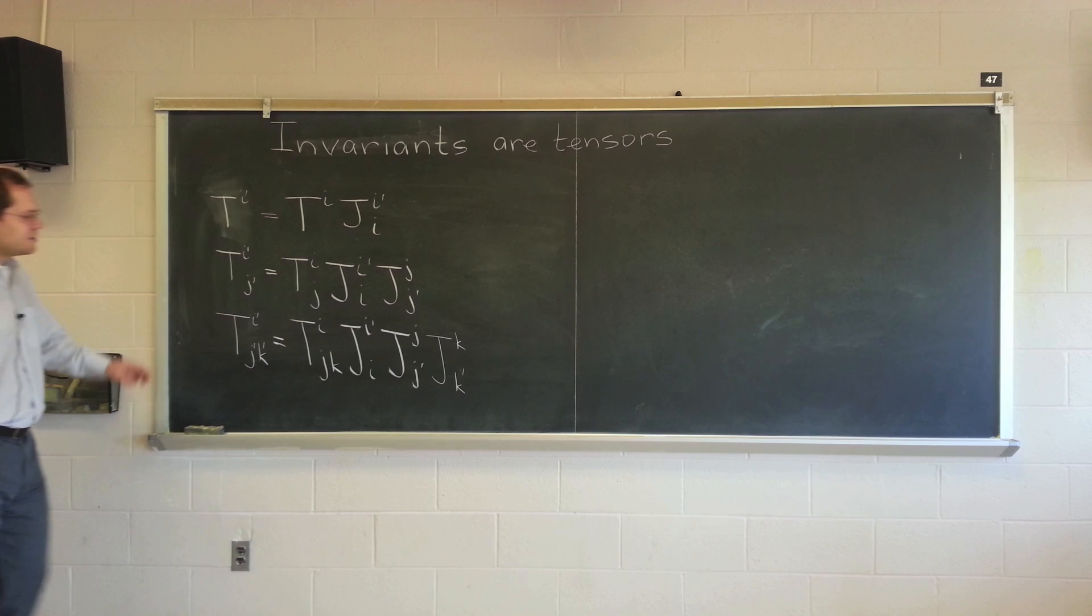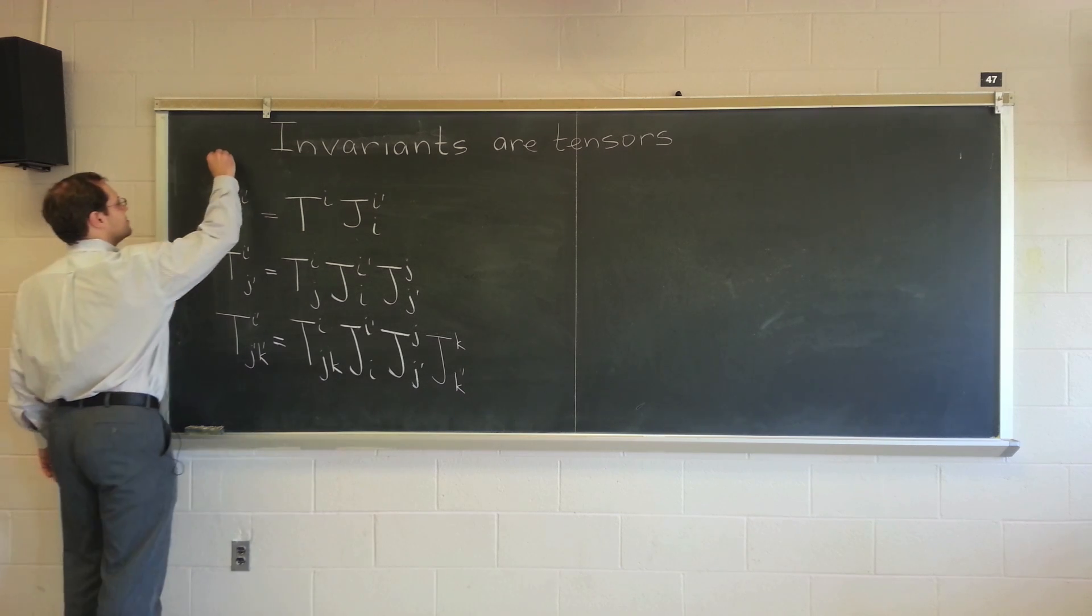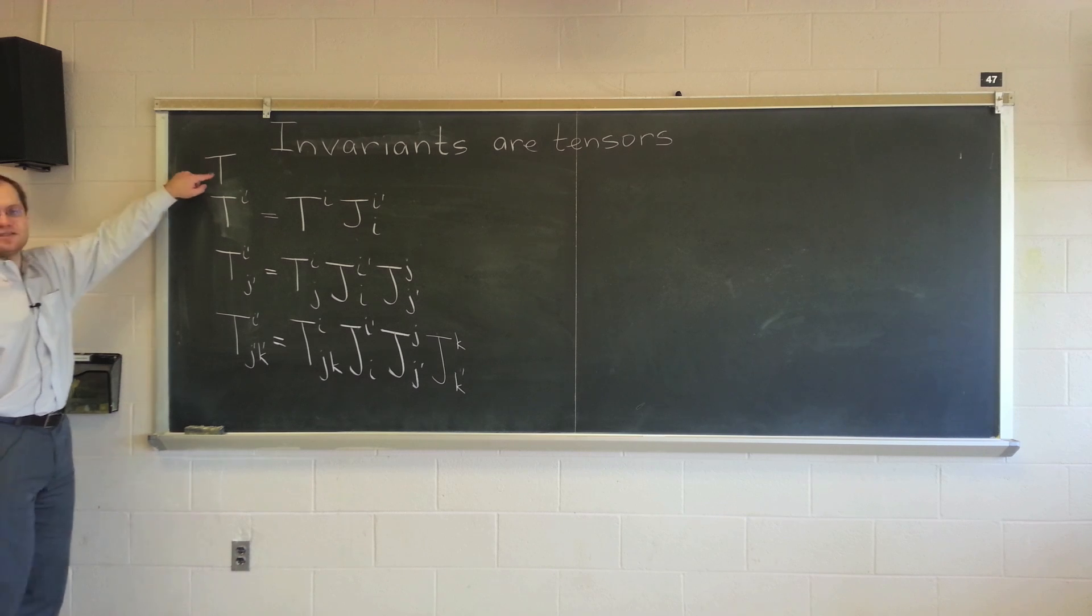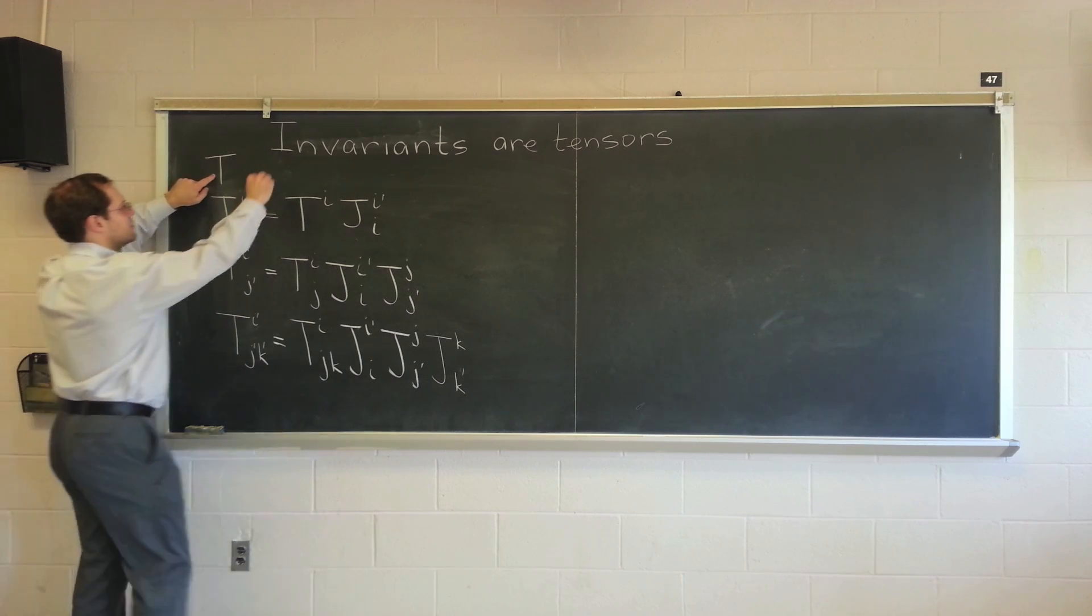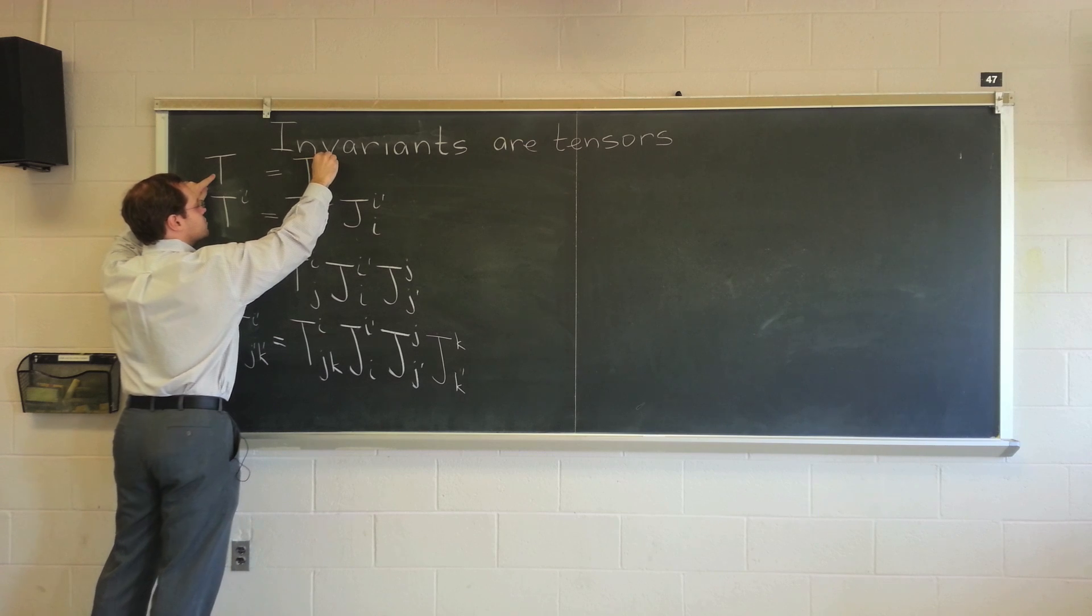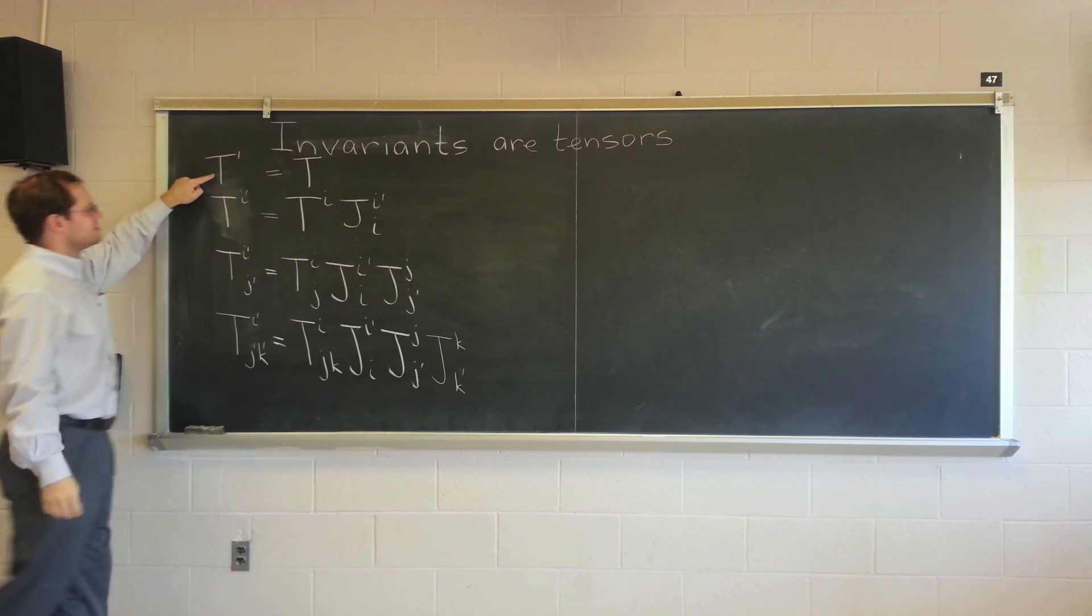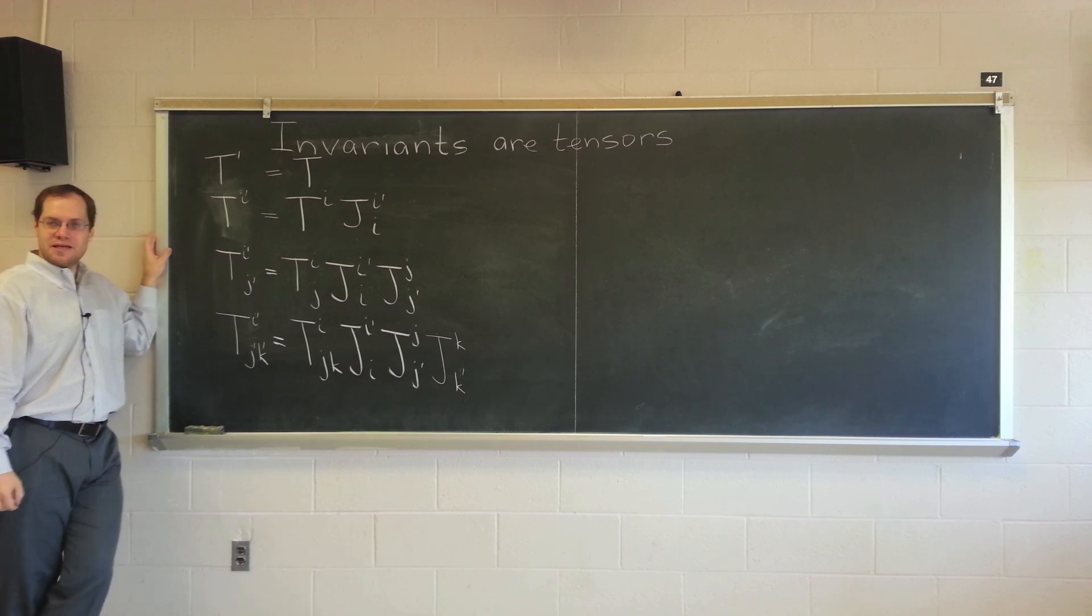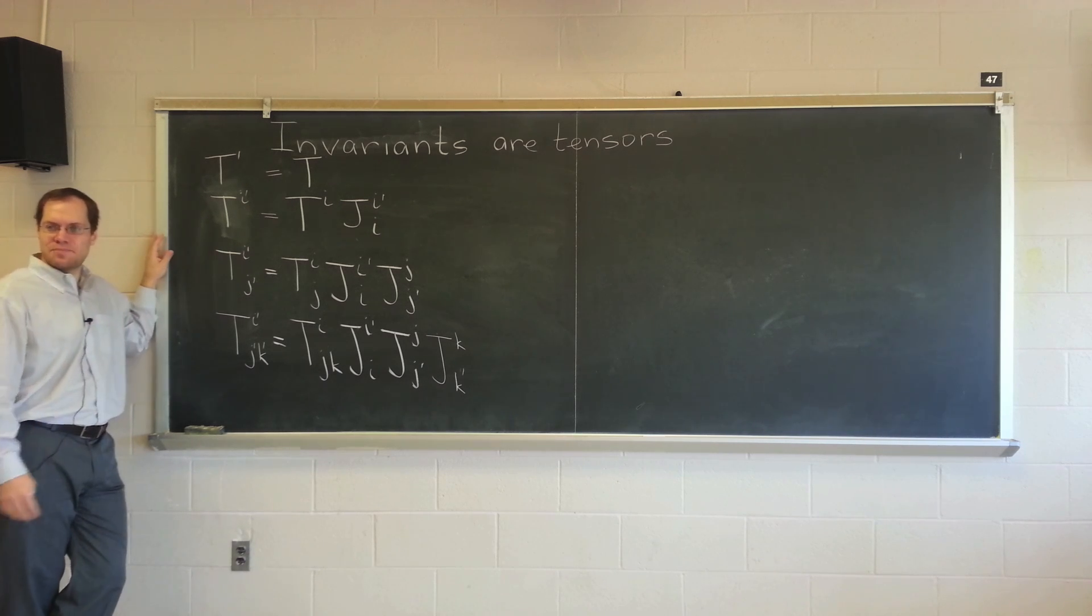So consistent with this scheme, an invariant is also a variant of order zero that transforms according to this rule. So maybe I'll write it like this, because I don't have any indices to put primes next to. But basically, you pursue the same recipe.